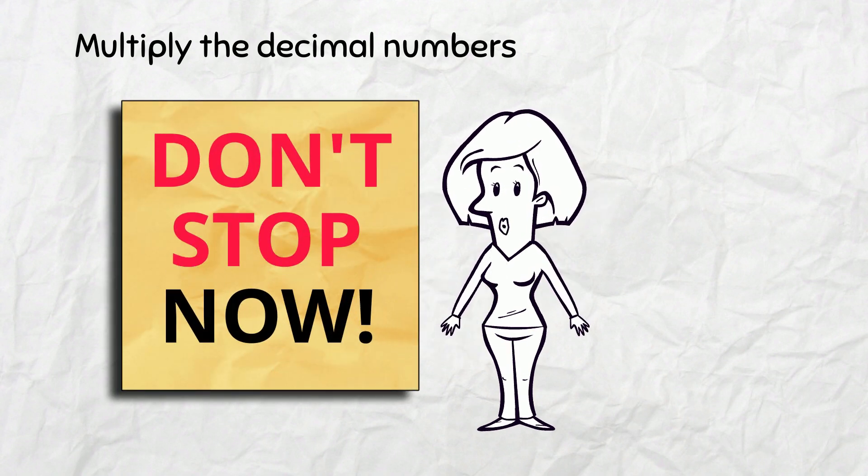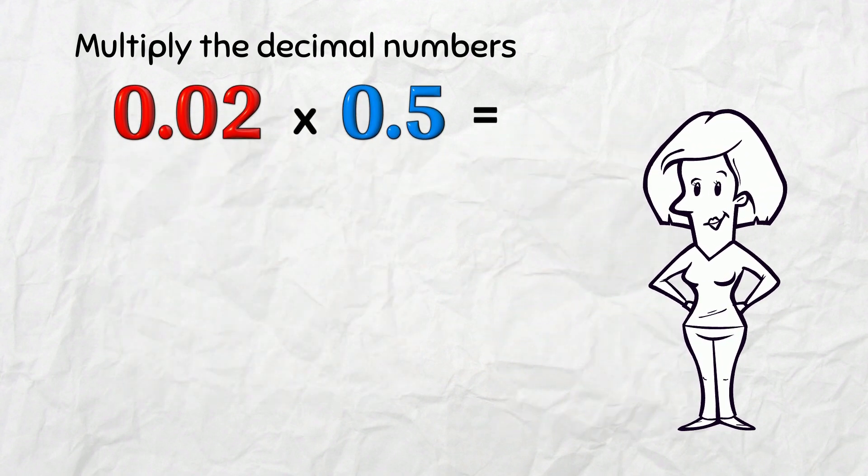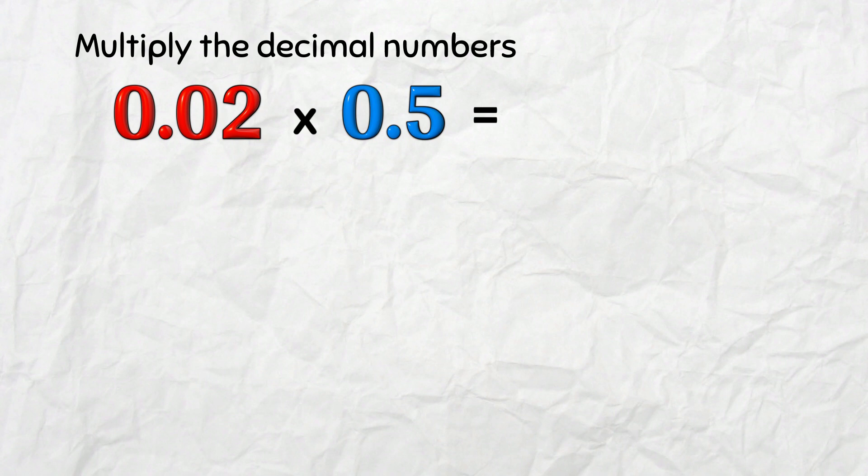Don't stop now though! Because there's a special case to watch out for, like in this example! Always focus on the multiplication first! 2 times 5 is 10. Notice it ends in a 0. OK!